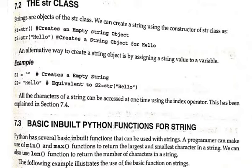Strings can be created in different ways. The first way uses the str class. S1 equals str with brackets open and close creates an empty string. S2 equals str with 'hello' creates a string with data.